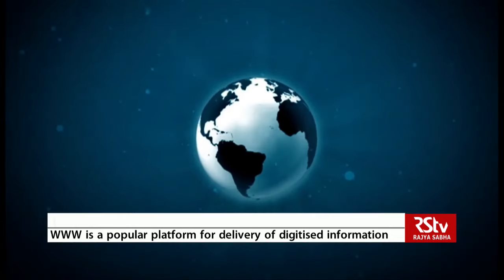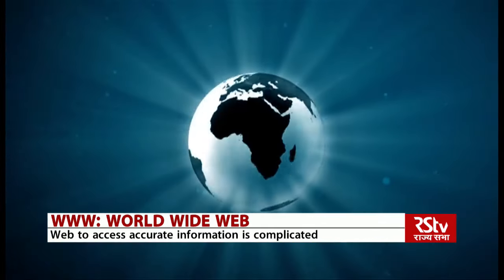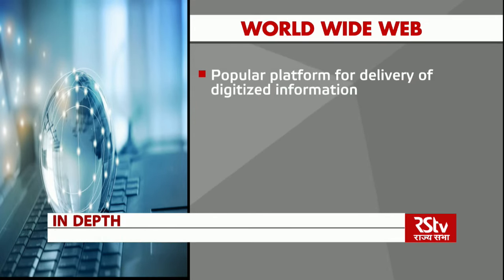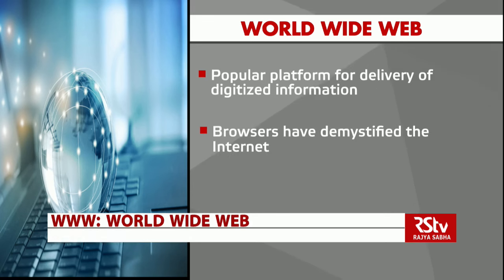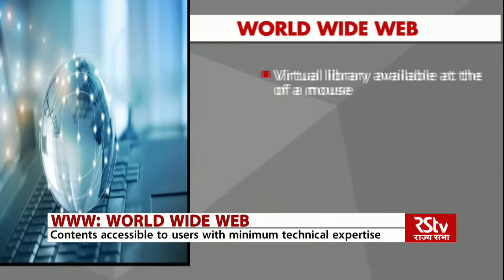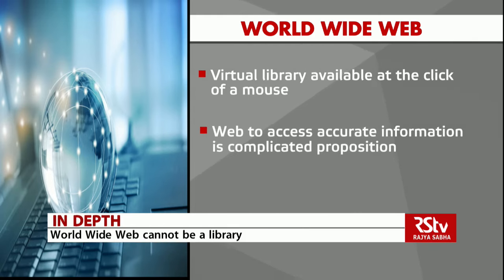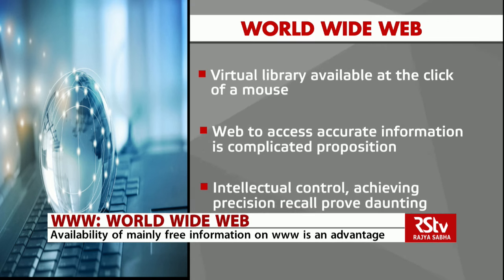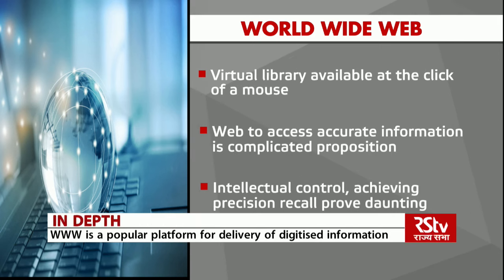Berners-Lee noted: 'We need to constantly be analyzing the web and how people interact on it, because what I'm worried about is a large-scale emergent phenomenon — like the financial system that works fine and then one day it crashes.' As the World Wide Web becomes an increasingly popular platform for the delivery of digitized information, librarians face the challenge of finding and using information that is accurate and reliable. Attempts at gaining intellectual control and achieving precision recall over an ever-expanding universe of text, image, and sound is daunting. Effective utilization of the web presupposes appropriate hardware, software, and searching skills, but websites also frequently lack the authority associated with published works.